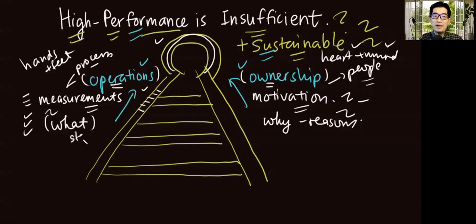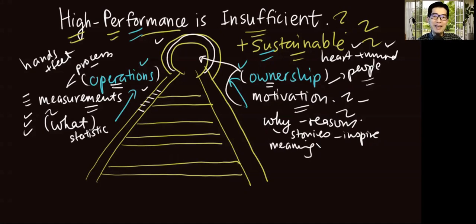In the what, you will talk about the statistics, the numbers, but in the why, you talk about the stories. You need to inspire your people as to why they should take ownership towards achieving the results. Because we as human beings, we are wired to achieve meaning in whatever we do. And if the storytelling is lacking and we are just focusing on the numbers, the work itself becomes less meaningful and there is less ownership while operation might still be there. So it might lead to high performance that is not sustainable. Why? Because the heart and mind is missing.